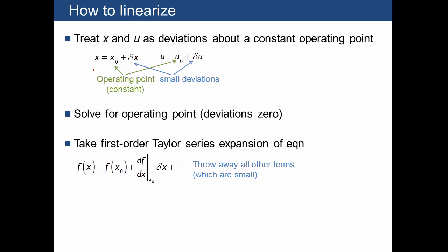We're next going to examine how to linearize systems. Here we want to treat x and u as deviations about a constant operating point. So x is the variable, or u is the variable that occurs in our differential equation, and we want to think of x as being a deviation, δx, about an operating point, which we're going to treat as constant. And the key here is that these operating points, x₀ and u₀, if they're constant, that's going to make everything much easier. The steps are we're going to solve for an operating point where the deviations are zero, and we're going to take a first-order Taylor series expansion of an equation.